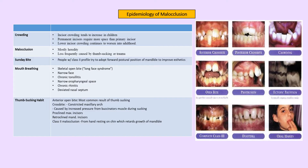An important exam point: the etiology of Class 1, Class 2, and Class 3 malocclusion — for Class 2, students often answer that it is because of habit, but that is not correct. Class 2 malocclusion is mostly hereditary, and less frequently caused by tongue sucking or trauma.